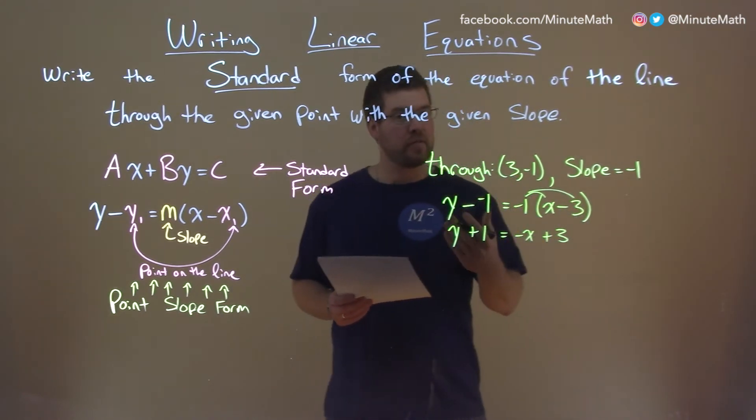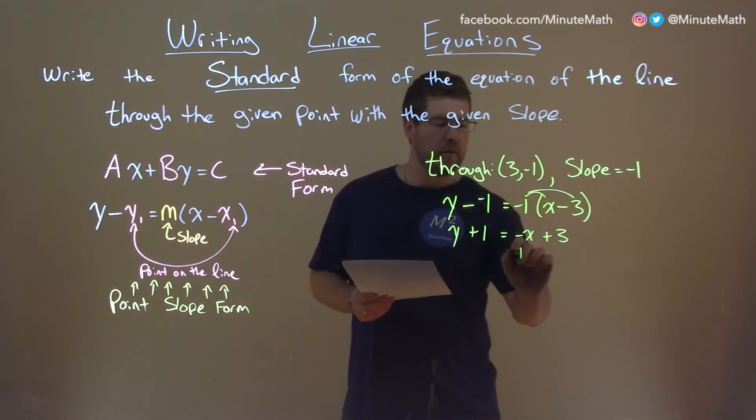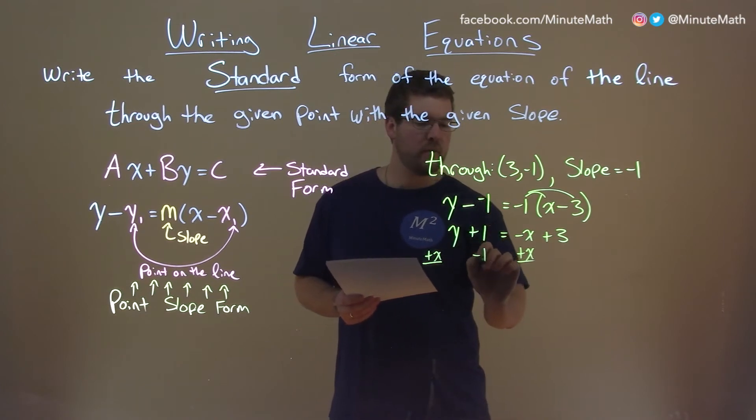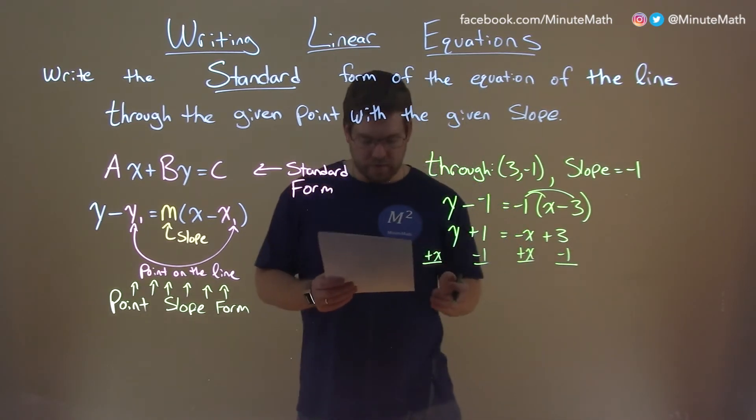Let's bring our x to the left and then our number to the right. We add an x here to both sides and we subtract 1 to both sides. This gives us,